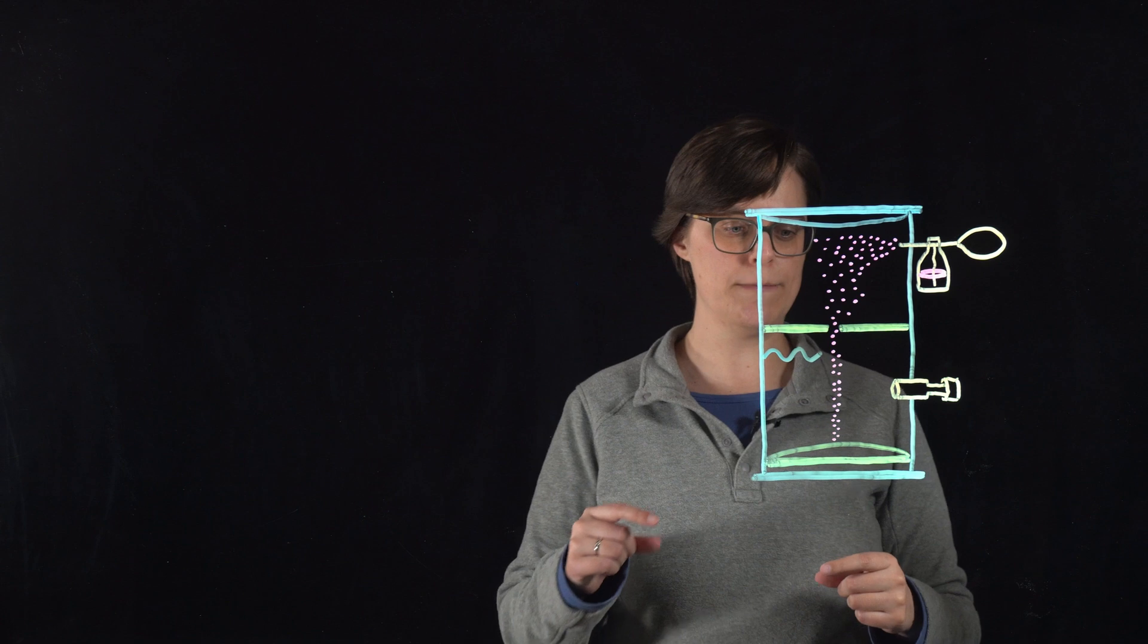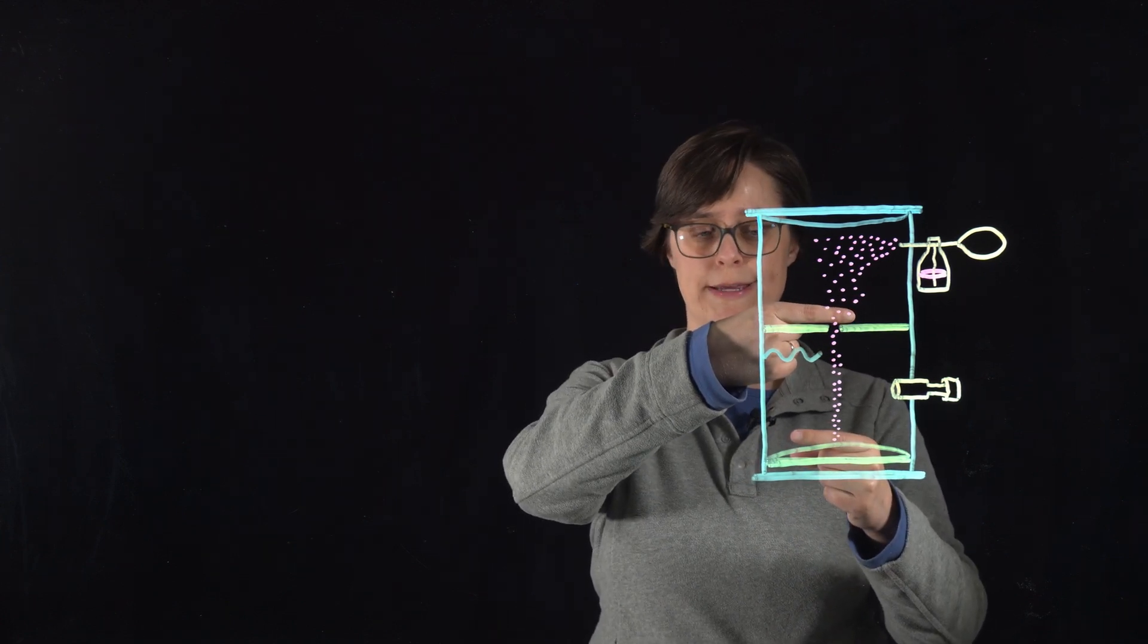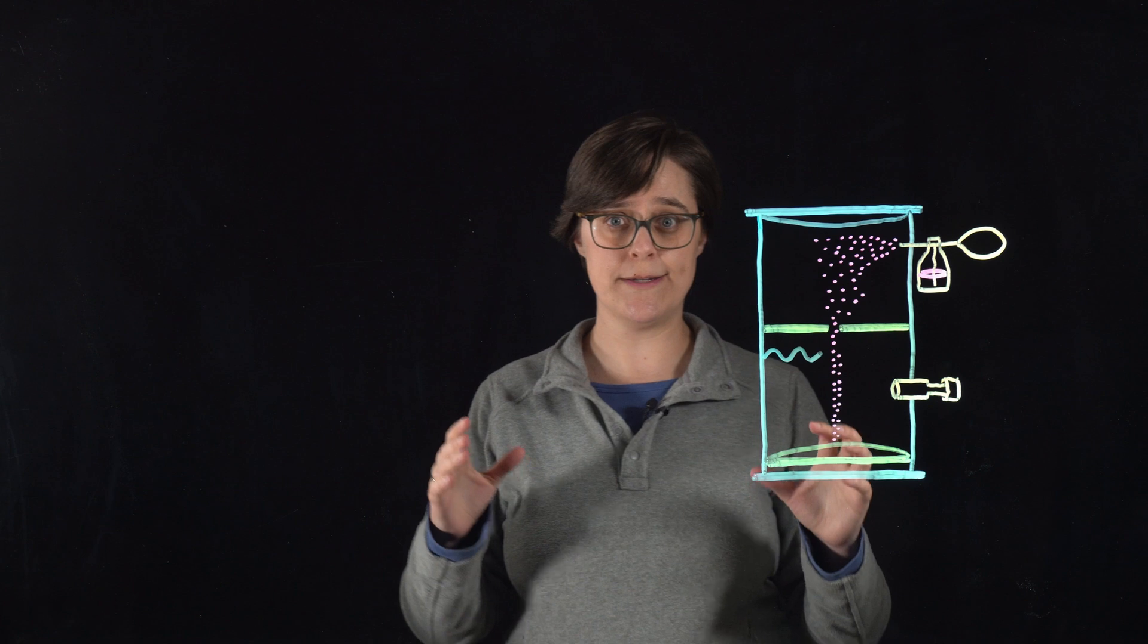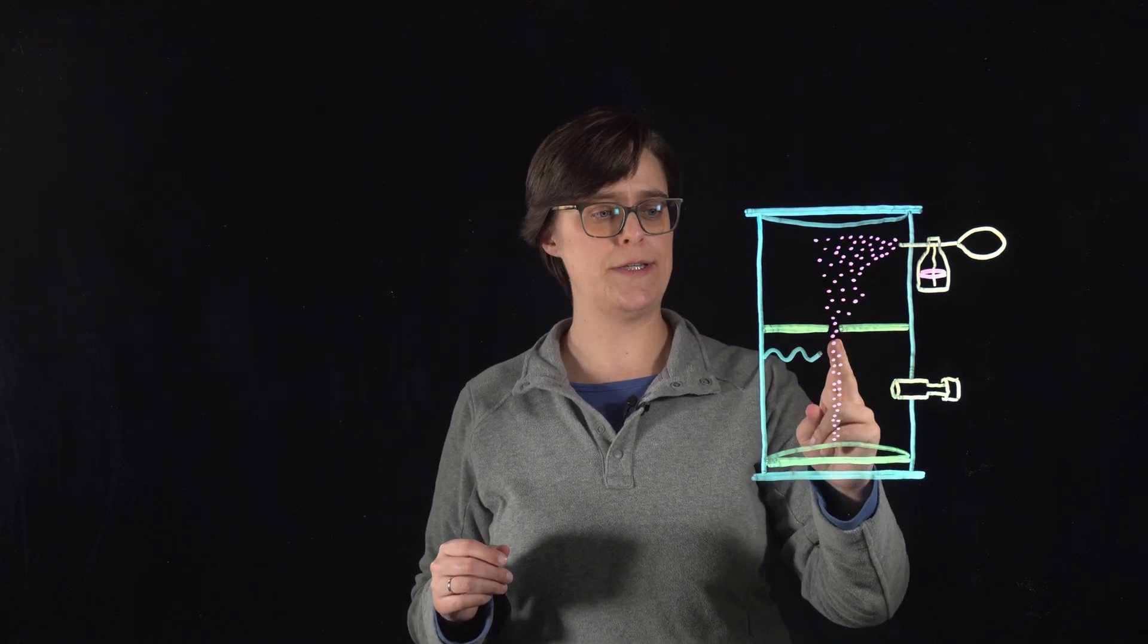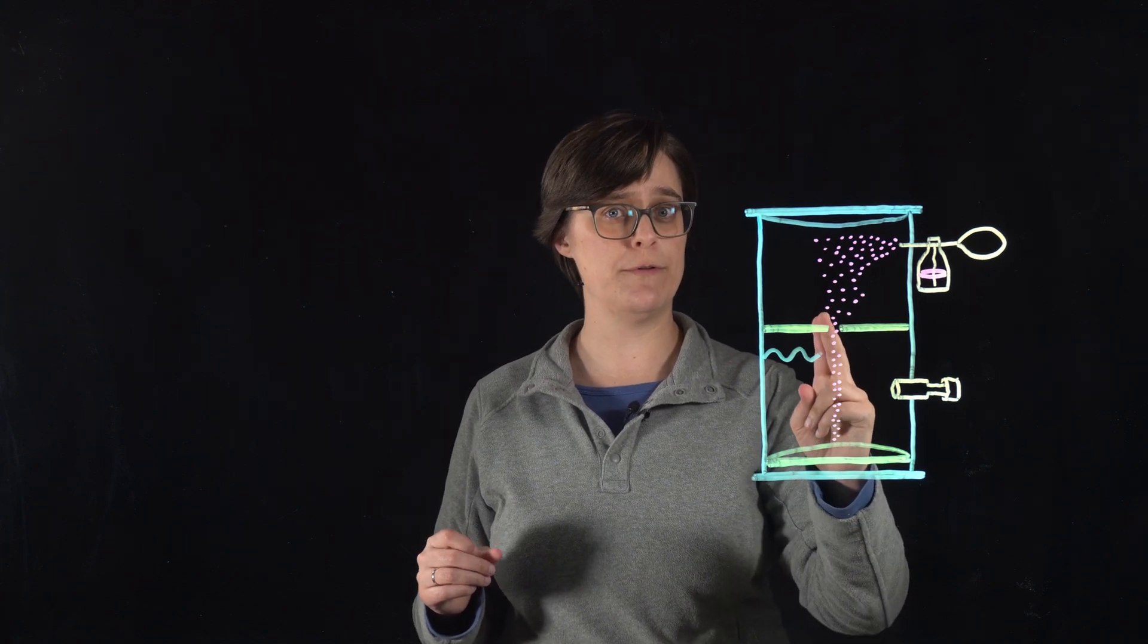Then he applied an electric field between these two metal plates. Based on the intensity of that electric field, the rate at which these oil droplets were falling could slow or even reverse.